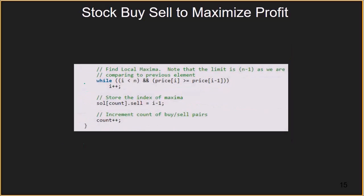Similarly, we find the local maxima by running a while loop with the condition that the price of the current element should be greater than the previous element. As long as this holds, we keep incrementing i. Once we break out, we save the index of the maxima as i-1, because we break when the previous element is greater than the current one — so the local maxima is the previous element. We then increment the count variable by 1.